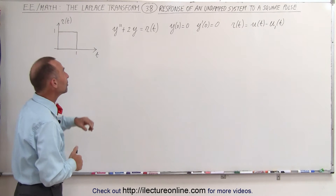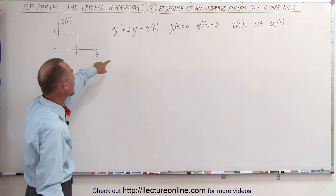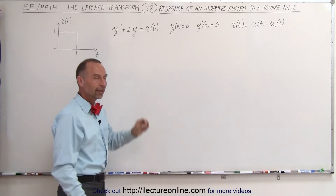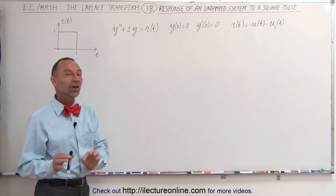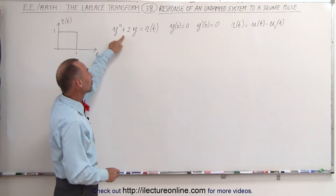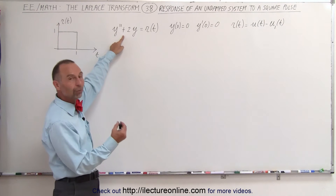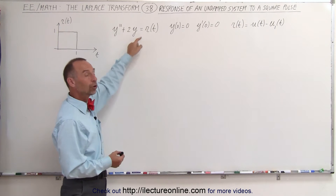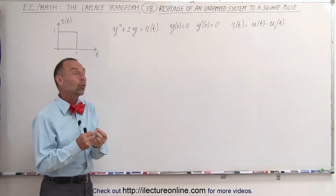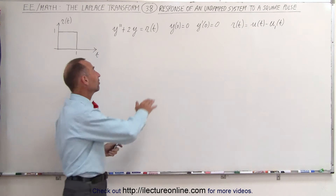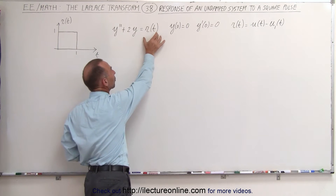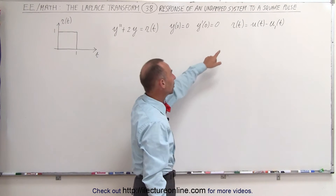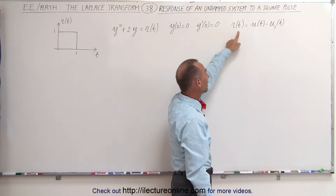The undamped system equation is right here. It's y double prime plus 2y. How do we know that it's undamped? Because it's missing the middle term. The middle term is usually the damping term. Notice it's no longer a homogeneous equation — it's not set equal to zero. It's set equal to some response, and the response is a simple square wave.